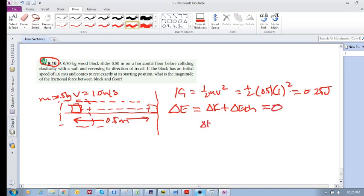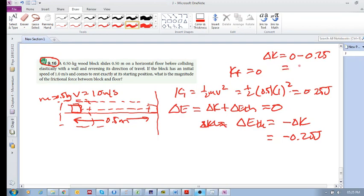We know that delta E thermal is the negative of delta K. And it is the negative minus 0.25, because our K final is zero, so our delta K is zero minus 0.25. I made a mistake, so delta K is minus 0.25, so delta E thermal has to be minus minus 0.25, so it is 0.25 joules. And of course that makes sense because your thermal energy should generally always be positive.